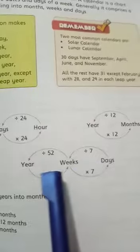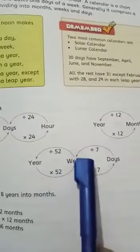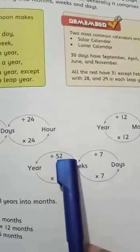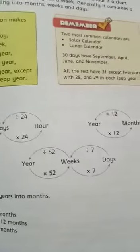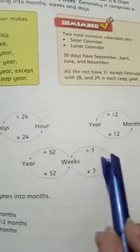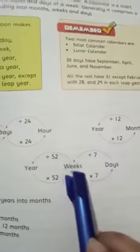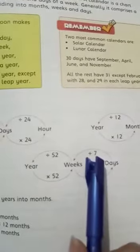If we convert weeks into years, we divide. If we convert days into weeks, we divide by 7. And if we convert weeks into days, we multiply by 7.